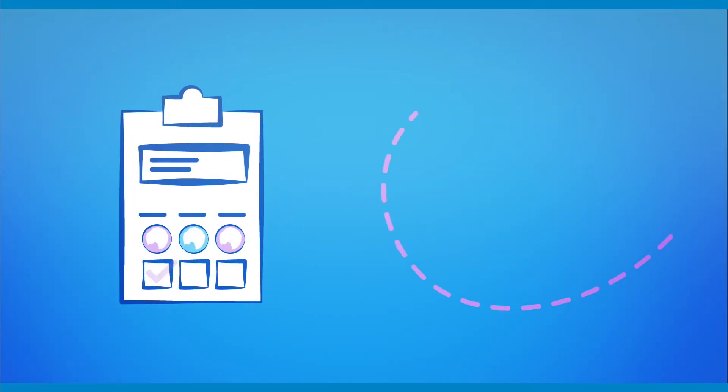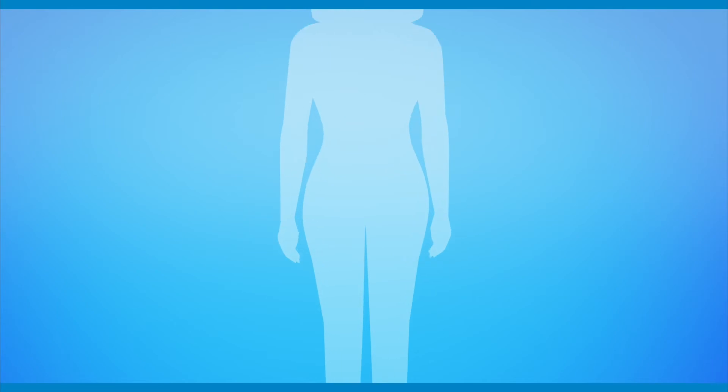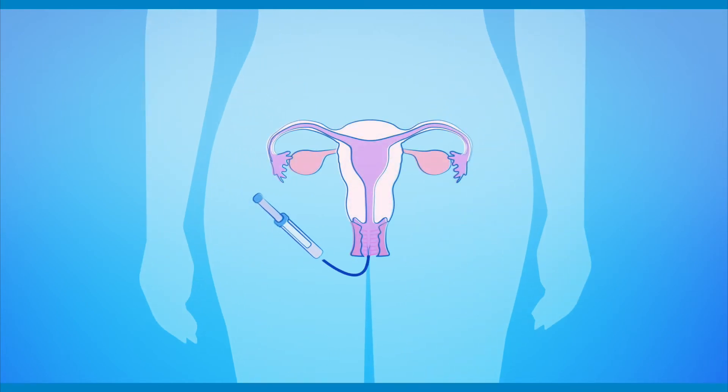iGenomics issues a report detailing the results of the PGS testing. This report is delivered to the fertility clinic, where you and your doctor can discuss the results and decide which embryo to transfer.